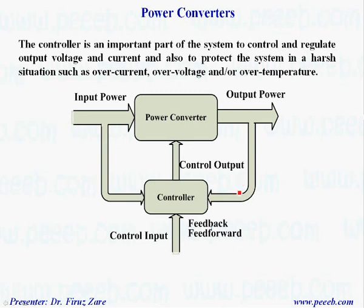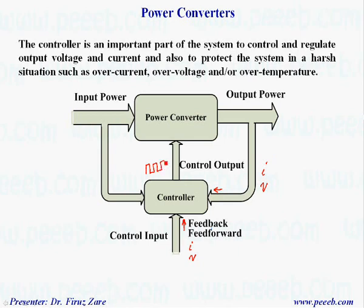The controller is an important part of the system to control and regulate output voltage and current, and also to protect the system in hard situations such as over-current, over-voltage, and over-temperature. The controller measures the output current or voltage, compares it with a reference signal, and based on this generates a control signal — a pulse pattern suitable for the converter — which turns on and off the power switches to provide the desired output voltage.